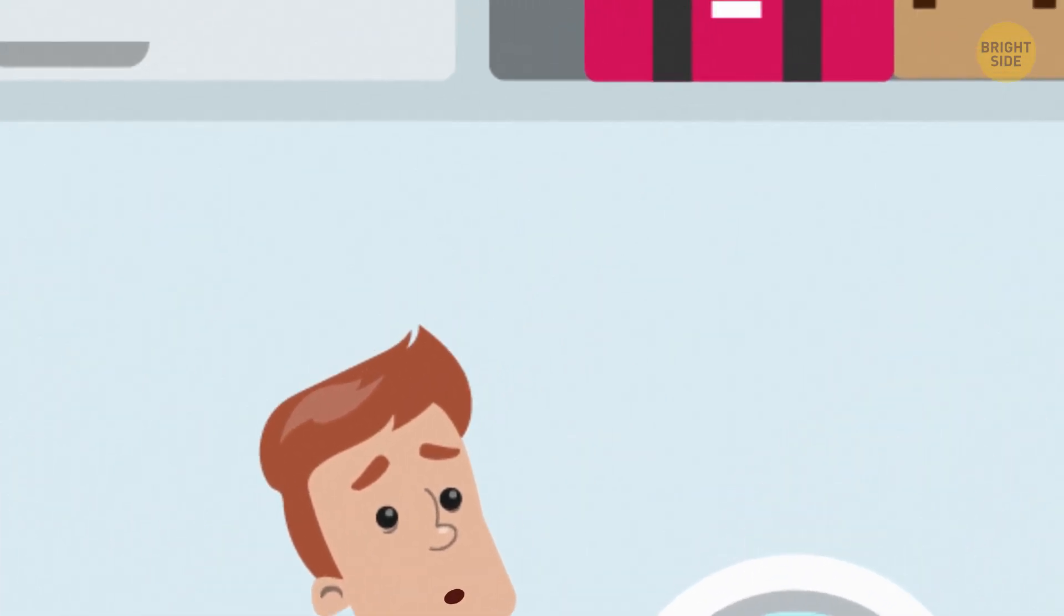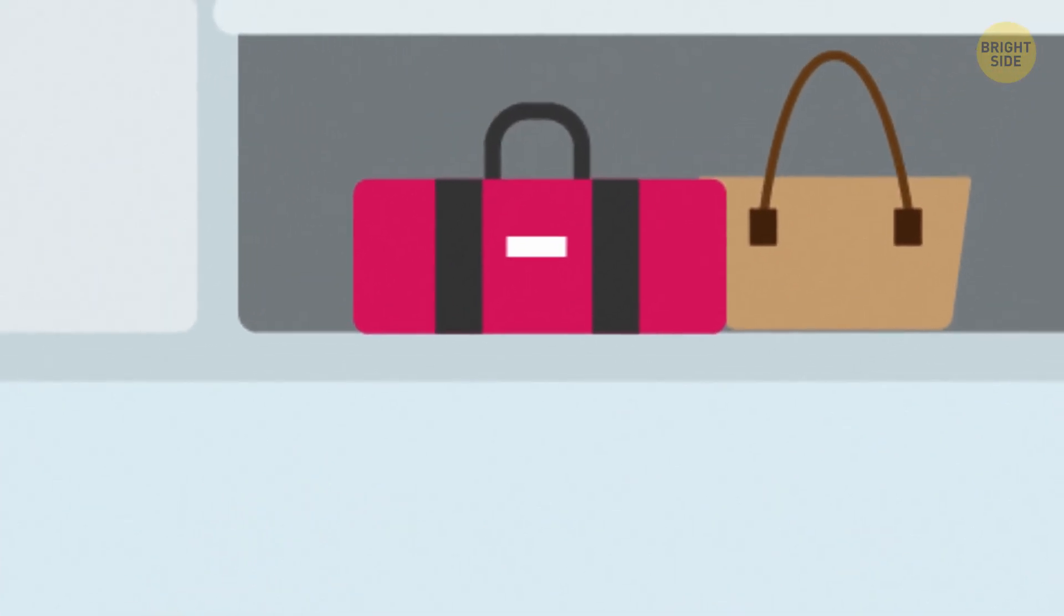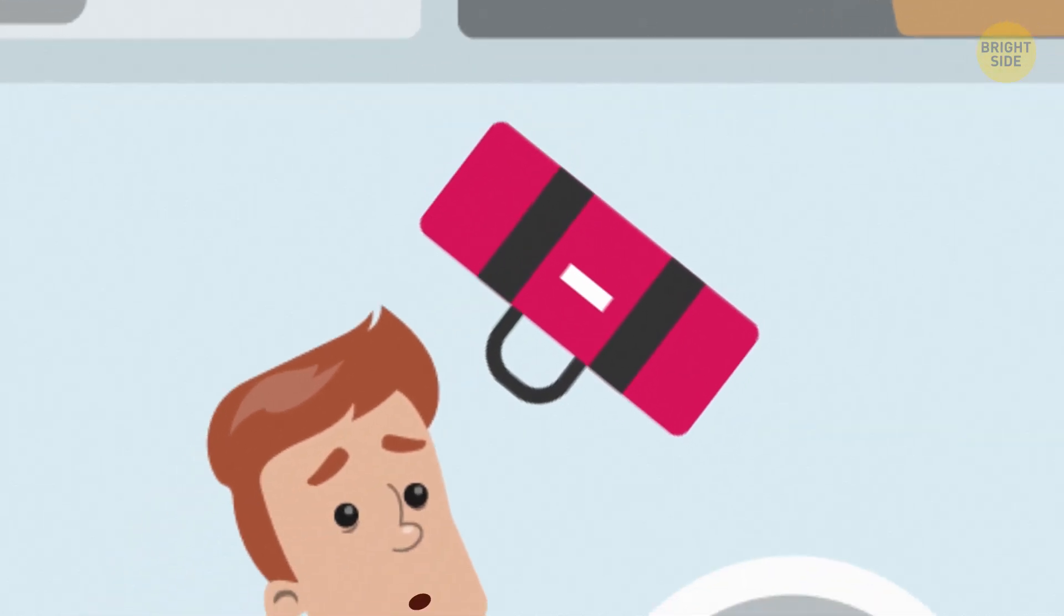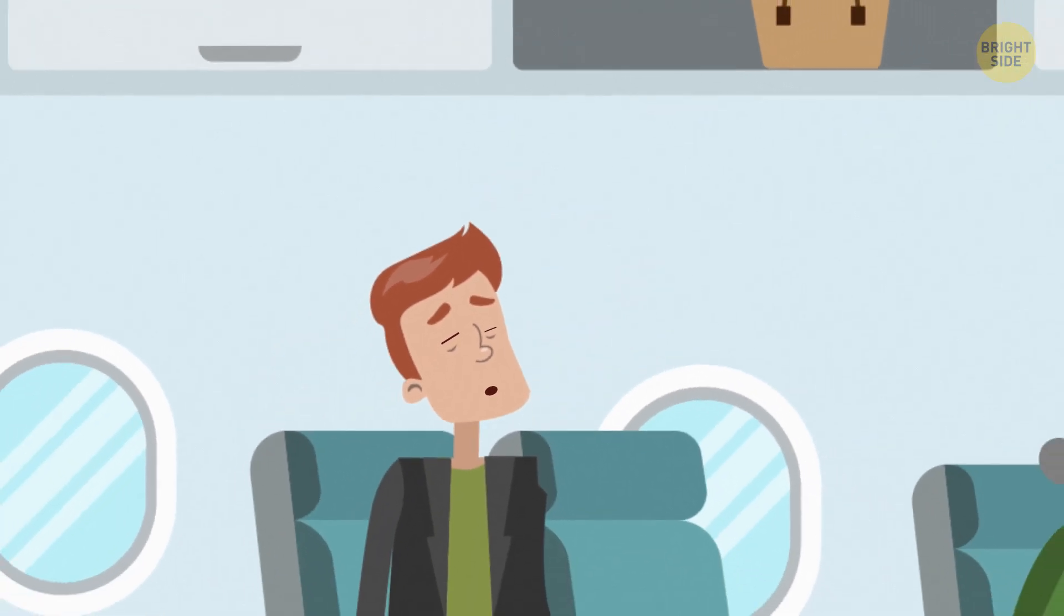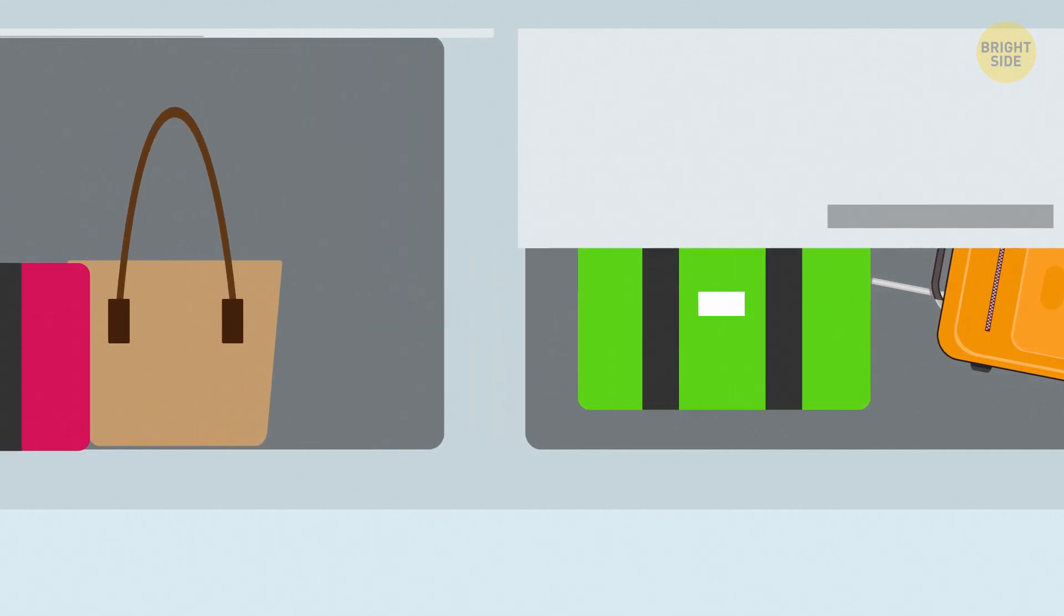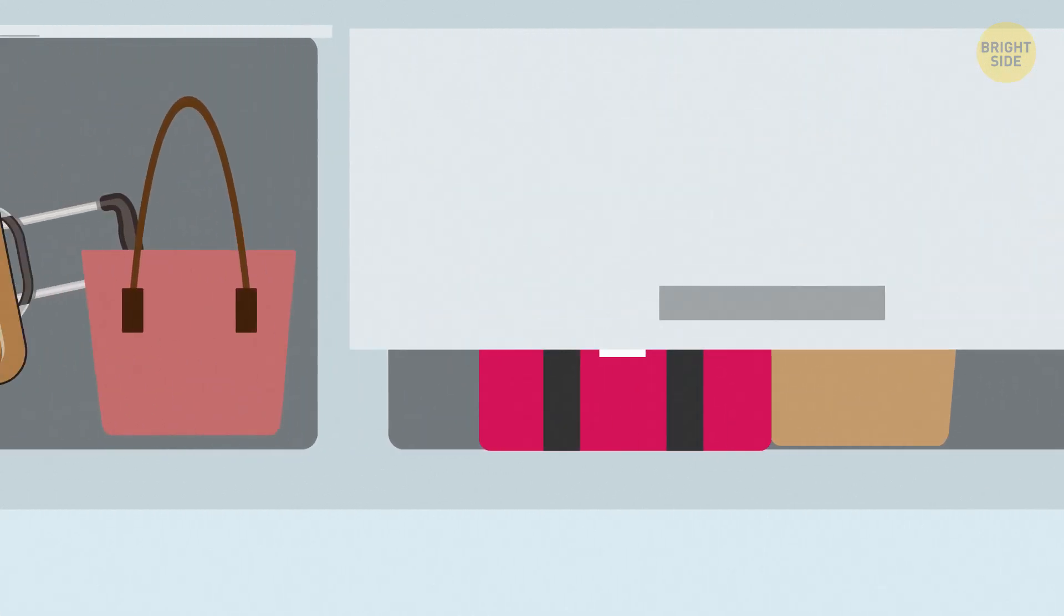Considering all that, the most dangerous thing that could come from turbulence would be if a carry-on falls out from the compartment and hits someone. That's why flight attendants see to it that all the overheads are tightly closed.